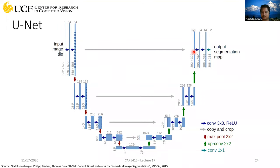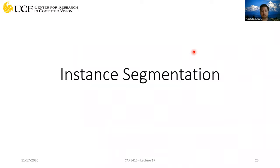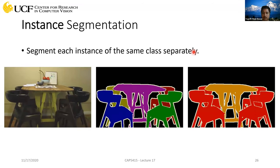So that was all about normal semantic segmentation. The next topic we're going to cover is instance segmentation. Instead of just predicting which category each pixel belongs to, we will also try to separate different instances of each class. Here we have a nice example with two categories of objects: chair and table. From semantic segmentation, black is the background, red is your chair, and orange is your table.